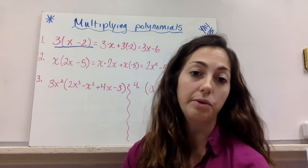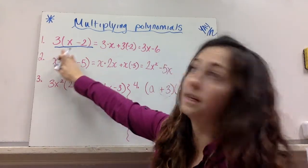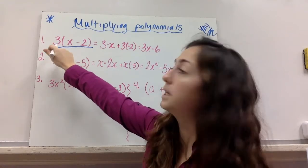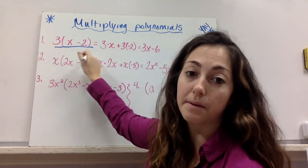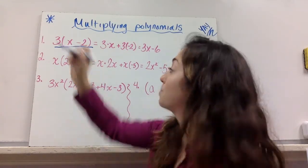If you worked with this right here, 3 times the quantity x minus 2, that is multiplying polynomials. 3 is a monomial, and x minus 2 is a binomial. So a monomial times a binomial. It's polynomials, multiplying.